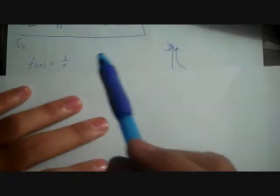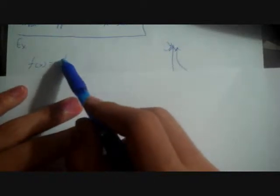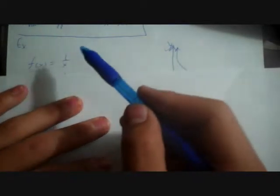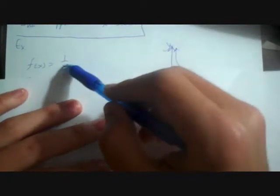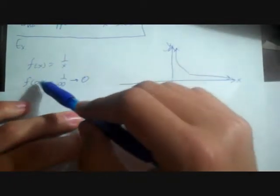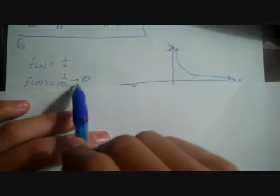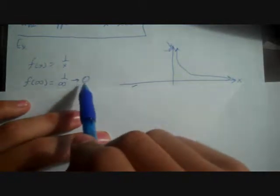The best way to introduce this idea is with an example. Take f(x) = 1/x. If we want to see how it behaves at infinity, let's plug in infinity. f(∞) = 1/∞, which is not a number, but as a limit it equals 0.